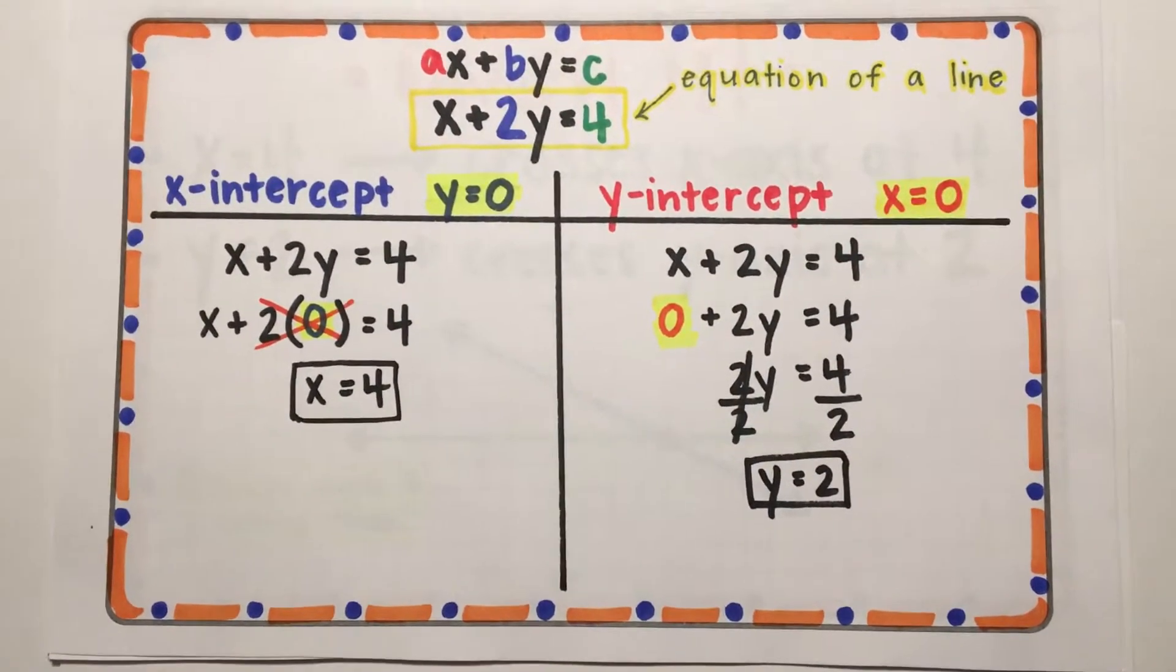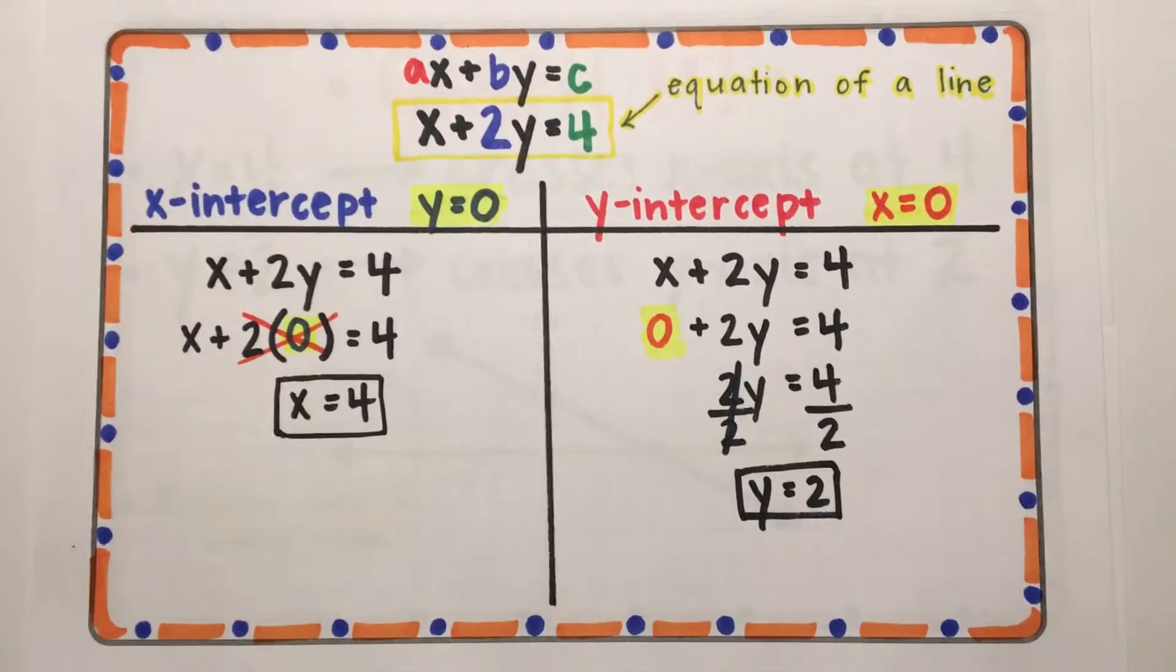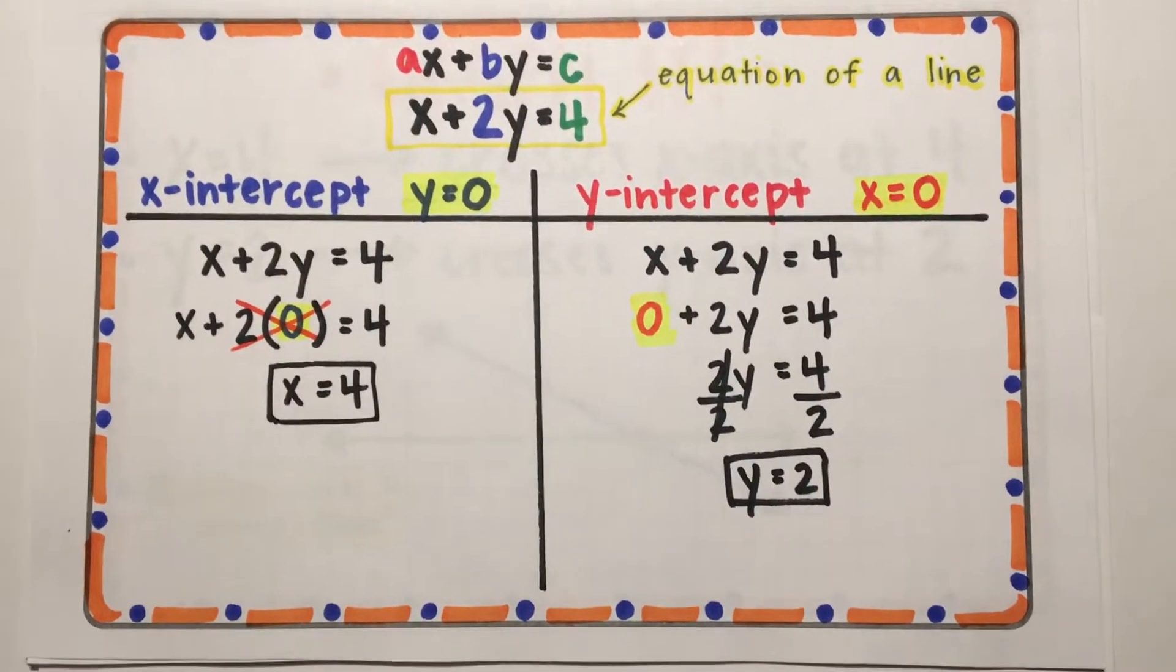I made a chart to stay organized. For the x-intercept, I replaced y with 0, and solved for x. Anything times 0 cancels out, so x equals 4.